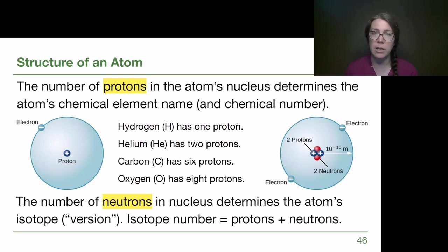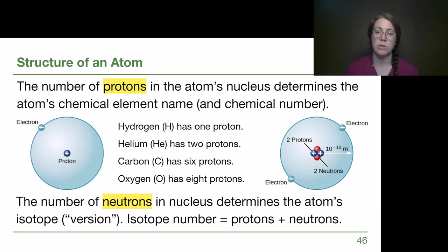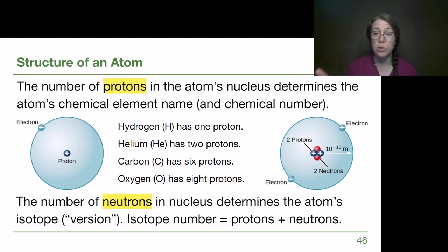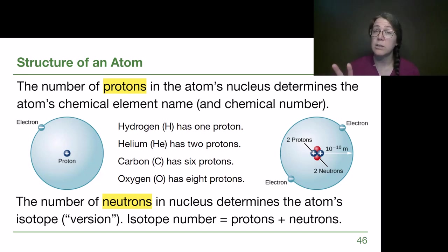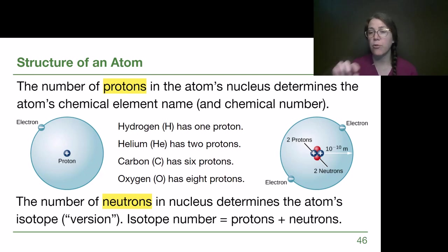We're not going to worry too much about isotopes this semester. On the right, we see two protons and two neutrons — the two protons tell us that's helium, and four total things in the nucleus tells us that's helium-4. That's as much as we need.